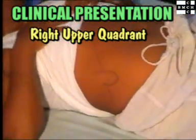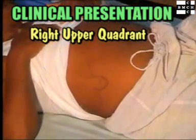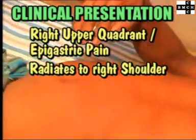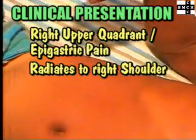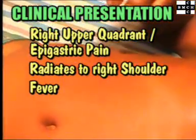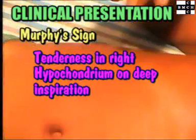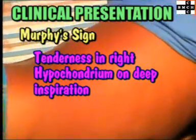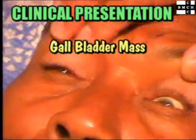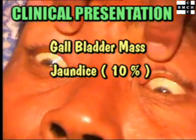Pain with cholecystitis is in the right upper quadrant or epigastrium, and can radiate to the right shoulder or interscapular region. There may be fever. Tenderness in the right hypochondrium on deep inspiration is called Murphy's sign. There may be a gallbladder mass, and jaundice occurs in about 10% of patients.